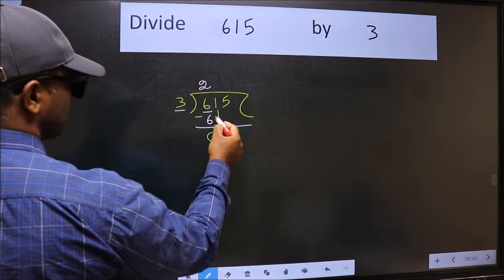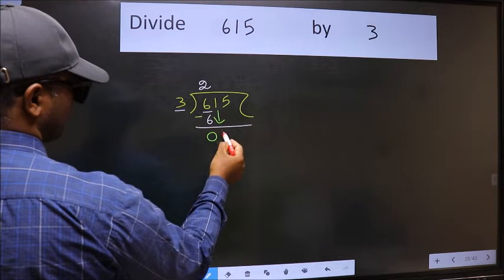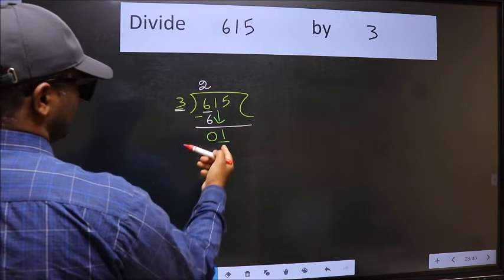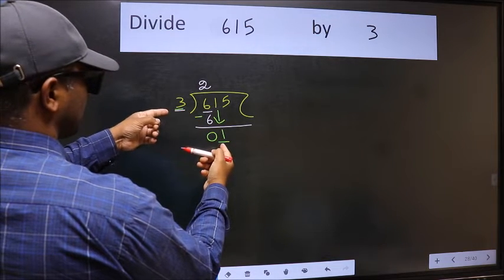After this, bring down the next number. So 1 down. Now here we have 1 and here 3. 1 is smaller than 3.